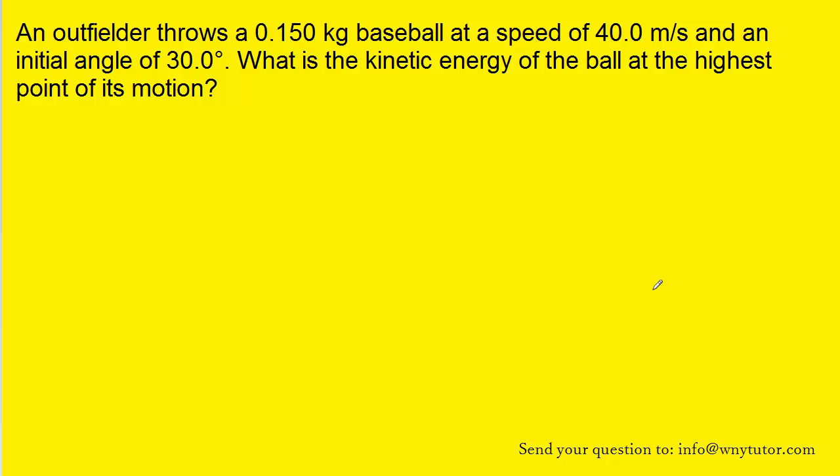To begin to solve this question, we can draw a simple picture that captures the information. So here we have the baseball that is thrown with an initial speed of 40 meters per second at an angle that is 30 degrees above the horizontal.